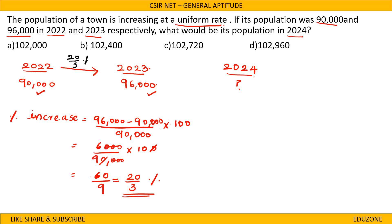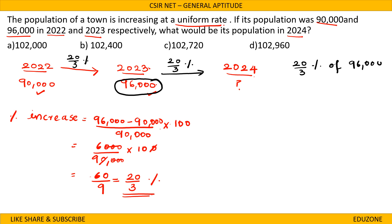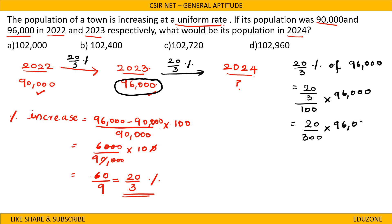The same percentage increase of 20 by 3 percent applies from 2023 to 2024. So we find 20 by 3 percent of 96,000, which is (20 by 300) into 96,000, giving 6,400. This is the increase in population from 2023 to 2024.